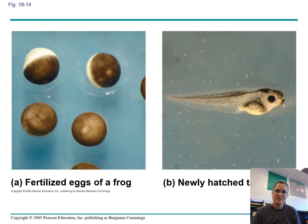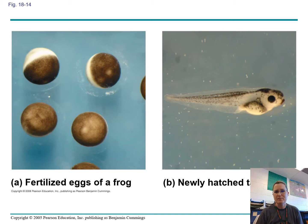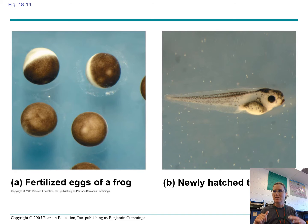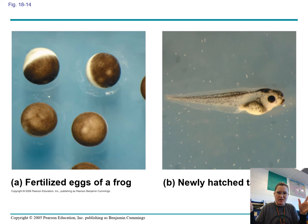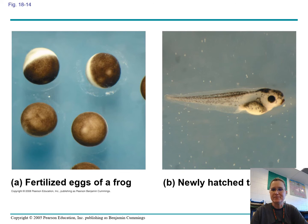This happens in all animals — fish, chickens, people, everything. We start out as a little blob, and then we start to get stuff like eyeballs, a spinal cord, and some squishy parts that kind of stick out both sides.